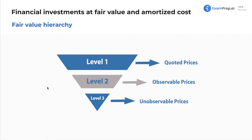Level one: quoted prices. Stocks would be level one because you can Google and see a quoted price — you can look online and see exactly how much your stock is worth.